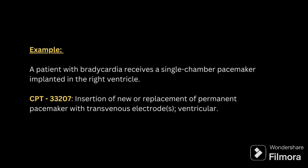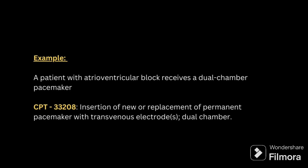Next example: a patient with bradycardia receives a single chamber pacemaker implanted in their right ventricle. We code 33207 — insertion of new or replacement of a permanent pacemaker with transvenous electrode, ventricular. Following that, a patient with atrioventricular block receives a dual chamber pacemaker, coded as 33208 — insertion of a new or replacement of a permanent pacemaker with transvenous electrode, dual chamber.